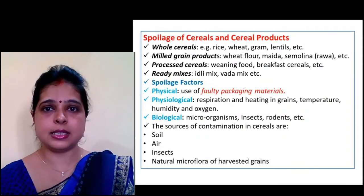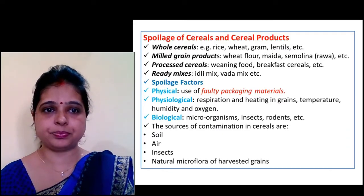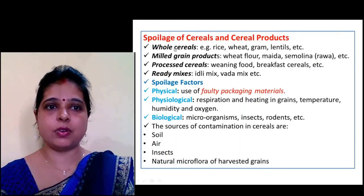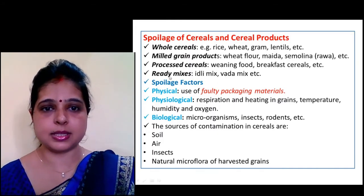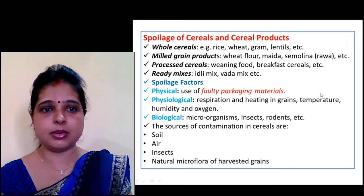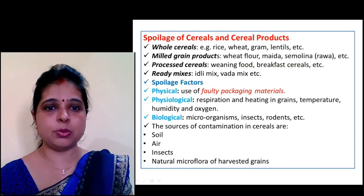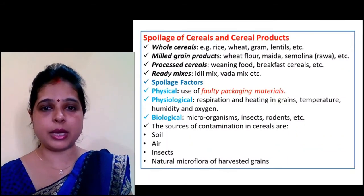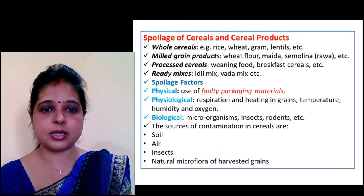Cereals and cereal products are classified as whole grains, milled grain products, processed cereals, and ready mixes. Examples include rice and wheat as whole cereals, wheat flour and maida as milled grain products, breakfast cereals as processed cereals, and idli mix and vada mix as ready mixes. Physical spoilage is mainly due to faulty packaging. Physiological causes include respiration and heating, while biological factors include microorganisms, insects, and rodents. Sources of contamination include soil, air, insects, and natural microflora.